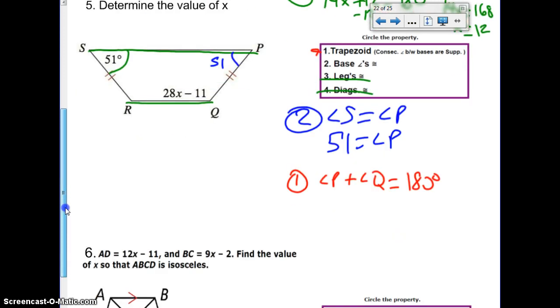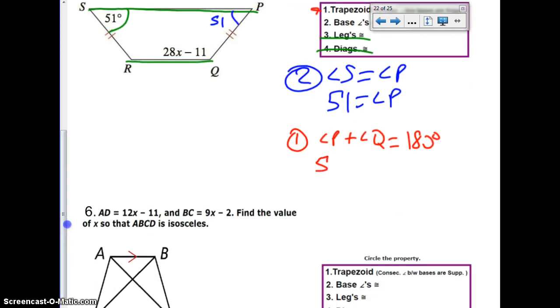So we can write that angle P plus angle Q is going to give us 180 degrees, because they're supplementary. So, like we did before, we just plug it in. Angle P is 51. Angle Q is 28X minus 11. That equals 180. So we combine all the terms. We get 40 plus 28X equals 180. Subtract 40. 28X equals 140. Divide by 28. And the answer that we get is, drumroll, 5.